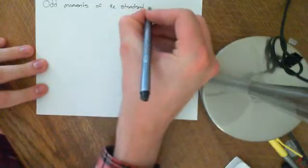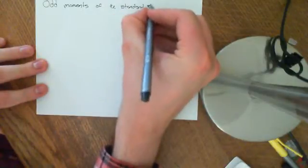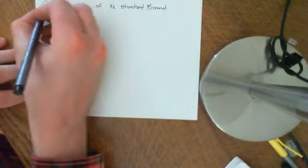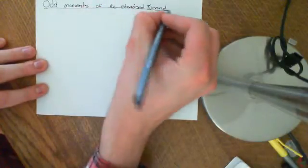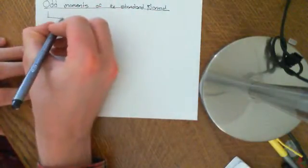So firstly I need to tell you what a moment is. Standard normal, I'll just put standard normal. So remember our setup. We have an abstract probability space, which I'll just draw here.